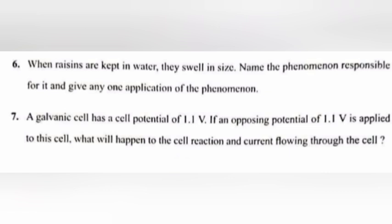Question 7: A galvanic cell has a cell potential of 1.1 Volt. If an opposing potential of 1.1 Volt is applied to this cell, what will happen to the cell reaction and current flowing through the cell? Answer: No cell reaction and no current flow.